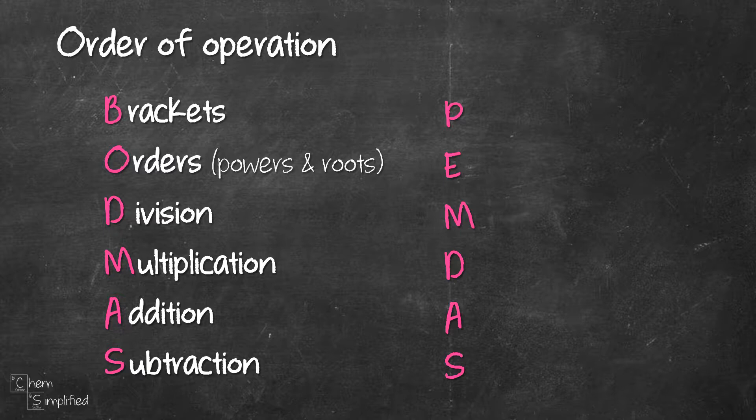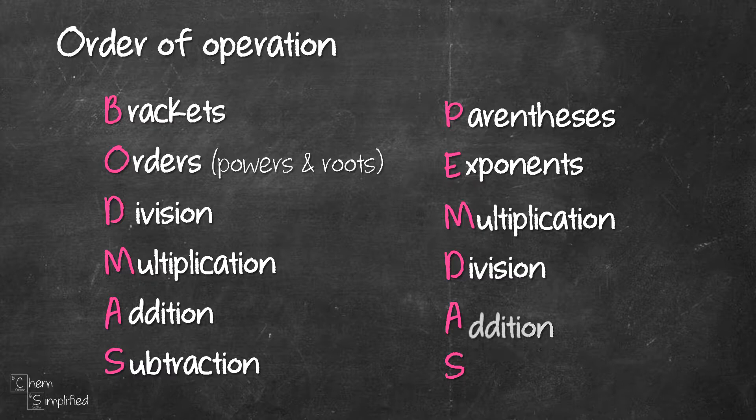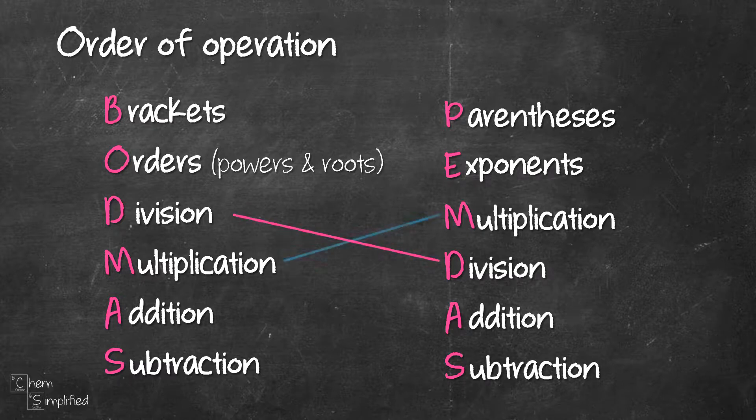In PEMDAS, it's basically the same thing. It's just that brackets is called parentheses, orders is called exponent. But you might notice that the order of division and multiplication is different between BODMAS and PEMDAS rule, but actually it doesn't matter because multiplication and division have the same priority, so they can be done in either order. Same goes to addition and subtraction. So if you think about it, both rules are the same.